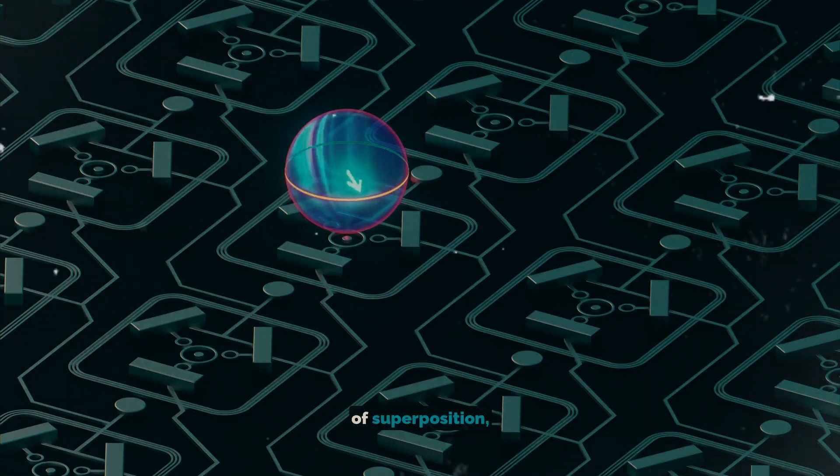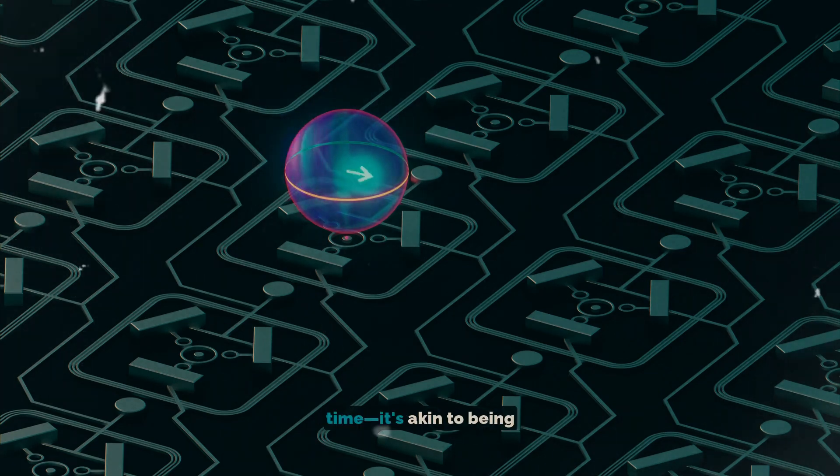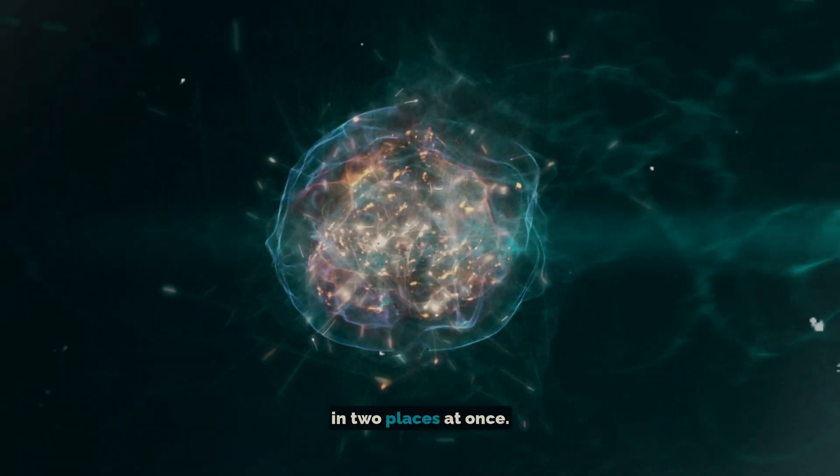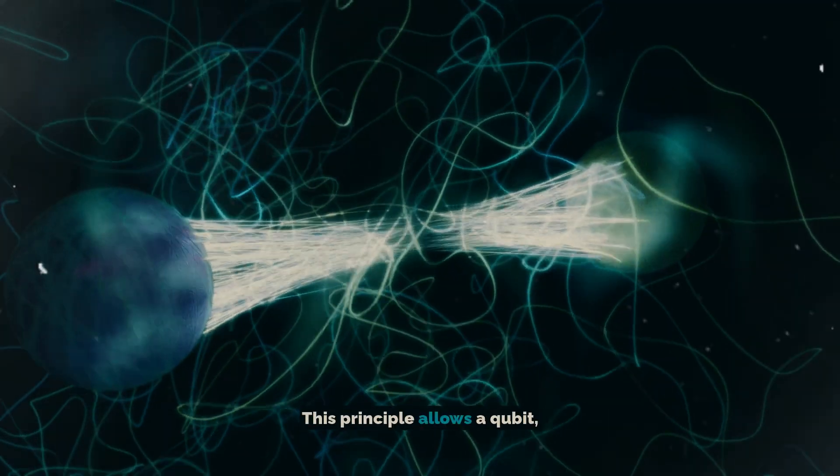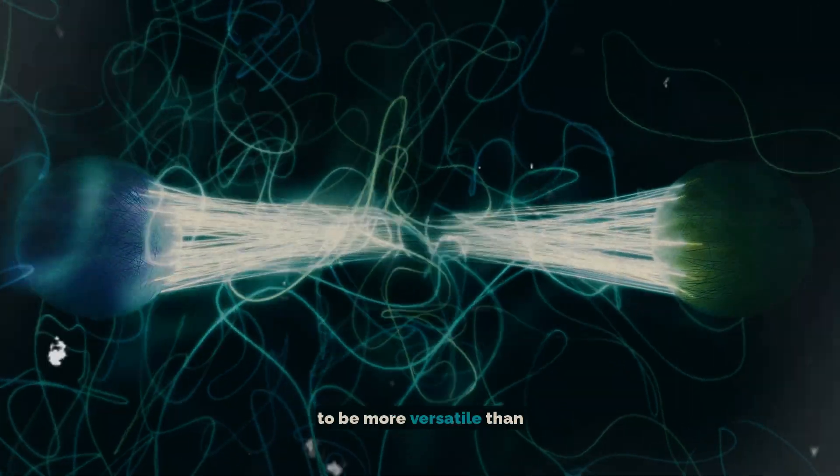Consider the concept of superposition, where particles can exist in multiple states at the same time. It's akin to being in two places at once. This principle allows a qubit, the basic unit of quantum computing, to be more versatile than a traditional bit.